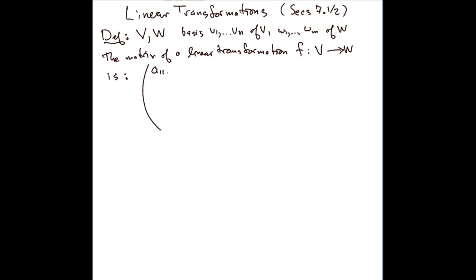It's the matrix a_11 through a_1n, a_m1 through a_mn. It's the m by n matrix where—here's the key point—a_ij is the coefficient of w_j in f(v_i). Okay, so this is the punchline here.